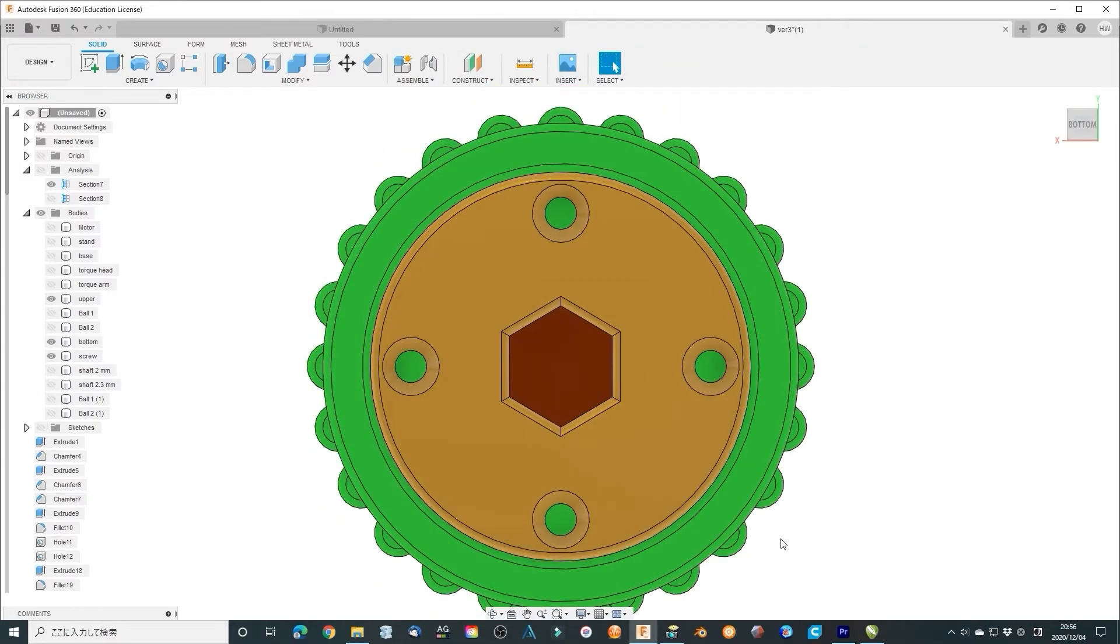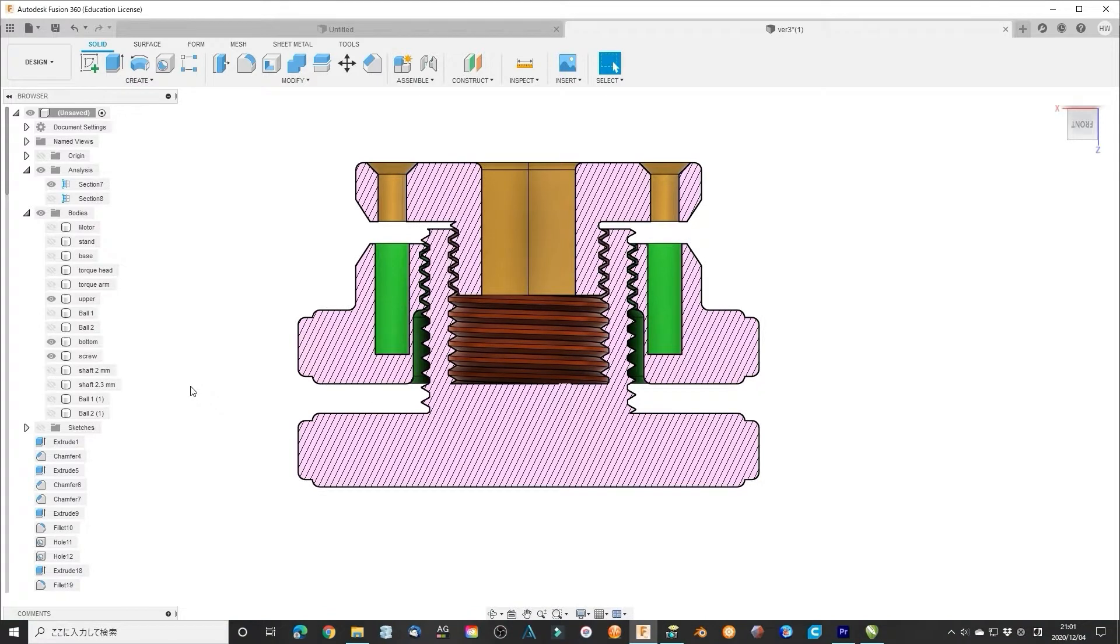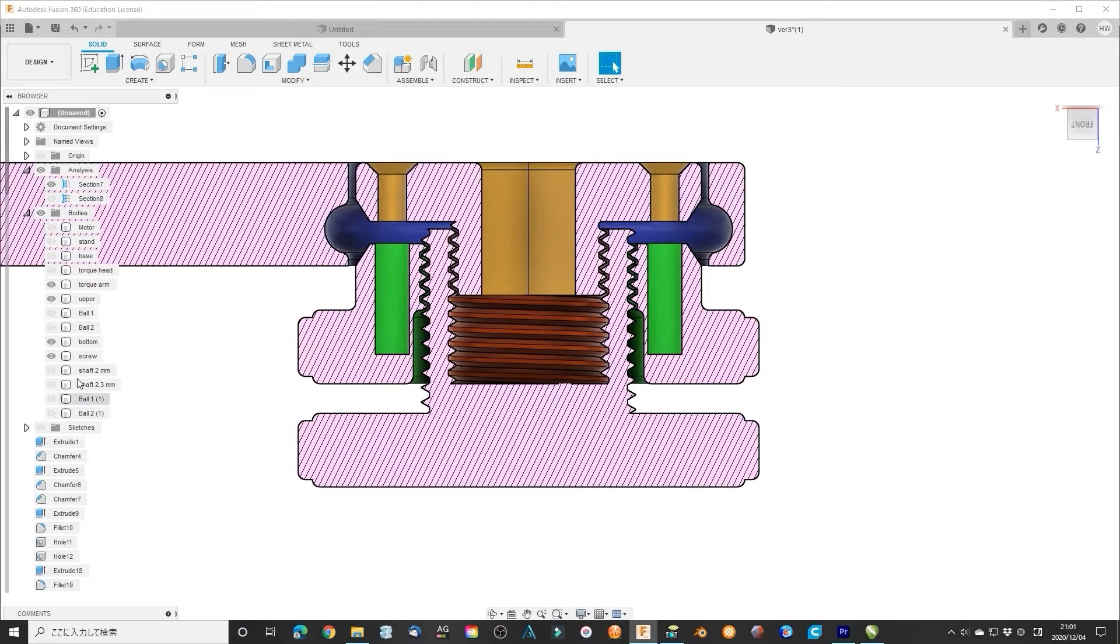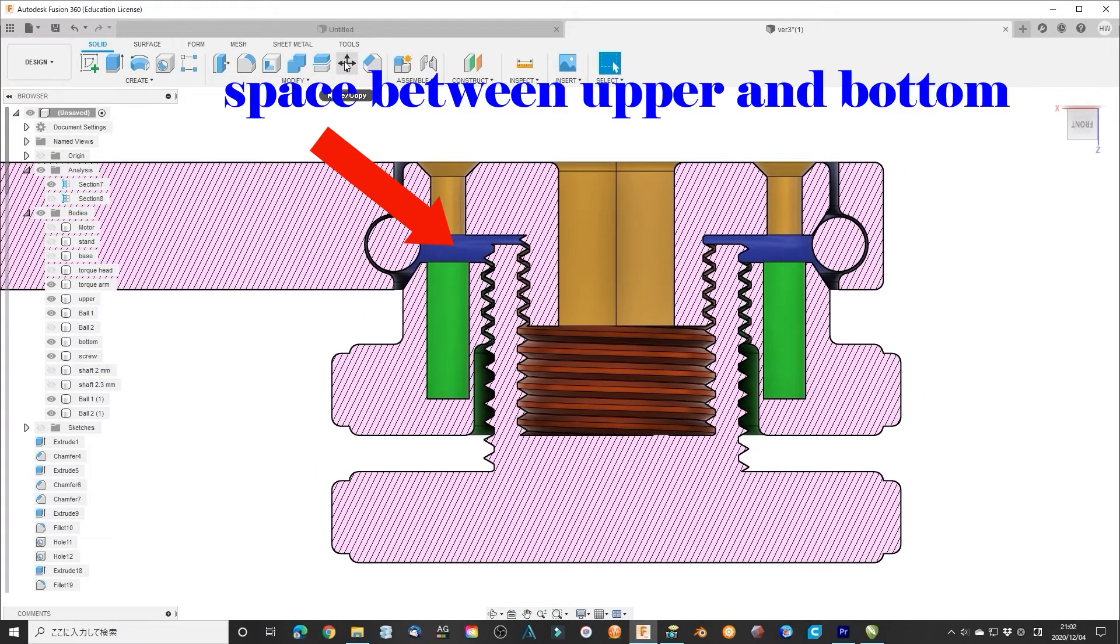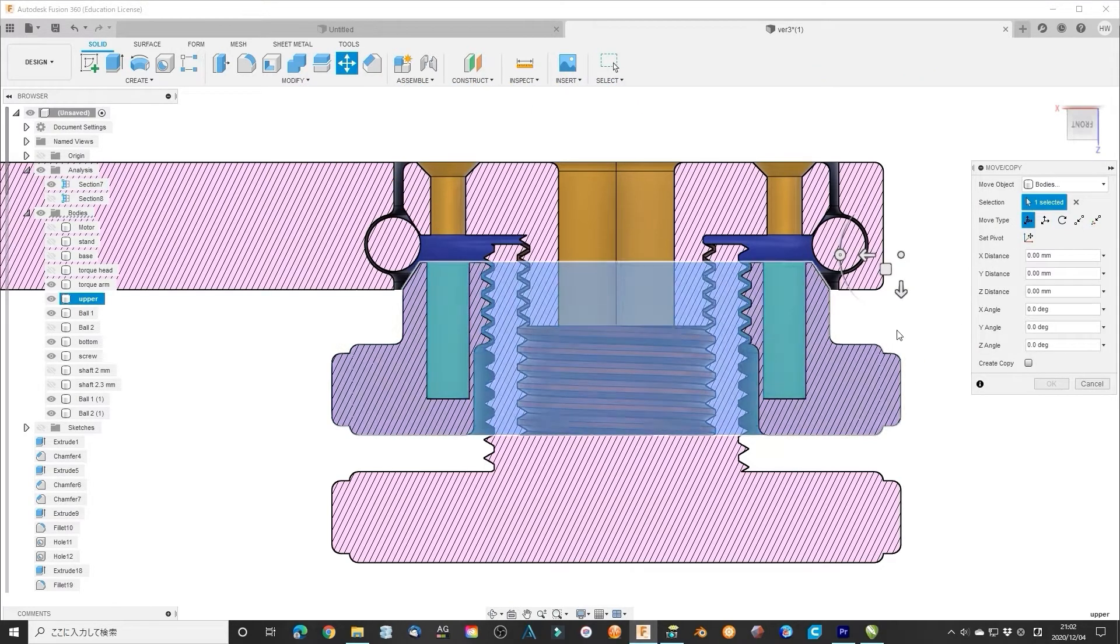They can move up and down but not rotate. When you rotate the screw, the space between upper and the bottom will change. When the space becomes small, they push the boards to the torque arm which increases the friction force.